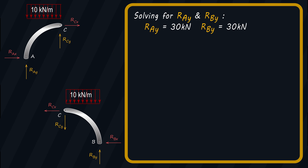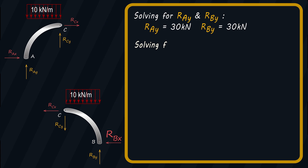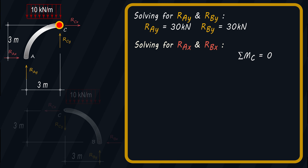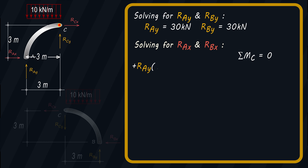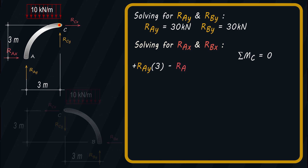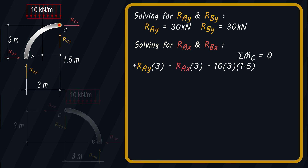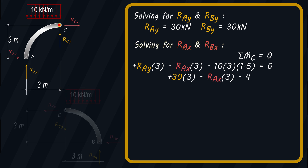Now, using the free body diagrams for members AC and BC, let us solve for RAX and RBX respectively. Summing the moment at point C, which should also be equal to zero, and taking clockwise moment as positive, we have: RAY times 3 minus RAX times 3 minus 10 times 3 times 1.5 equals zero. Substituting the value of RAY and solving for RAX, the result is equal to 15 kN.